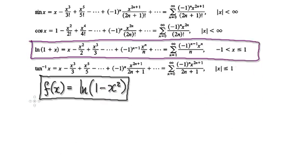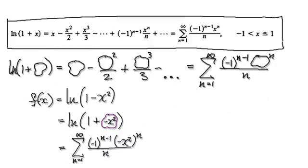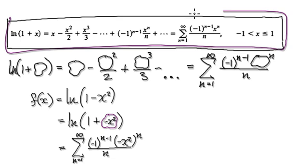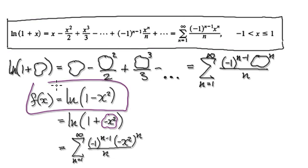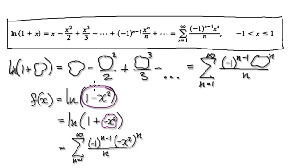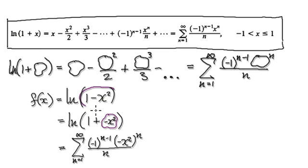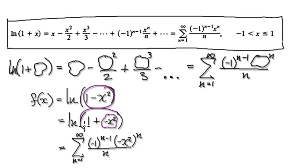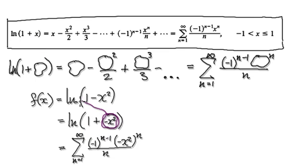To do this, we are going to make use of this. Looking at our function, our function here is very similar to this, except that here you've got plus x and here you've got minus x squared. So this thing here is very similar to this — imagine this as being like this, so now you've got 1 plus something. Now you've put this negative x squared into here.